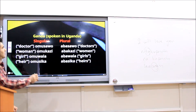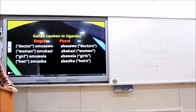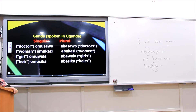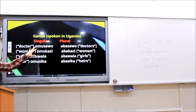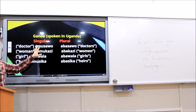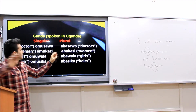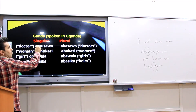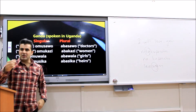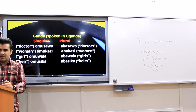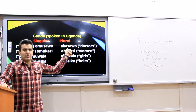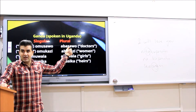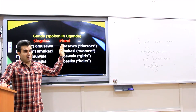Another language — Ganda, spoken in Uganda — can be inferred from the singular and plural. For example, 'doctor' is 'omusawo.' When you add 'aba' instead of 'omu,' it means doctors — it makes it plural. That means this is also a bound inflectional morpheme that is attached to the beginning of the word.